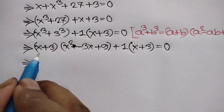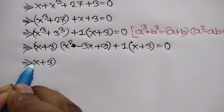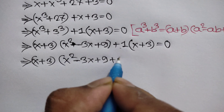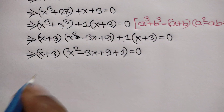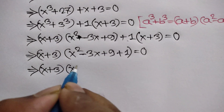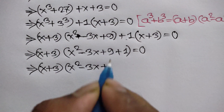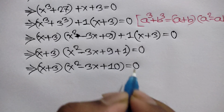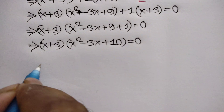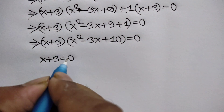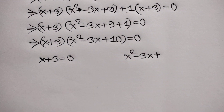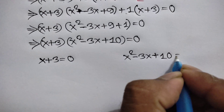Now taking out the common factor x plus 3, we get: x plus 3, times x squared minus 3x plus 9 plus 1, which is x squared minus 3x plus 10, is equal to 0.